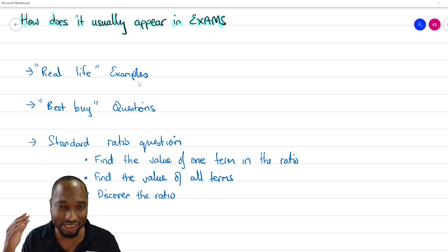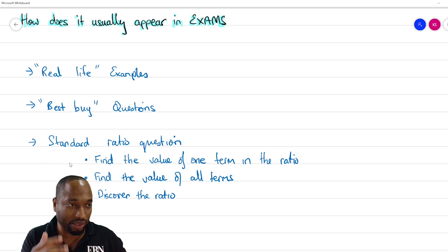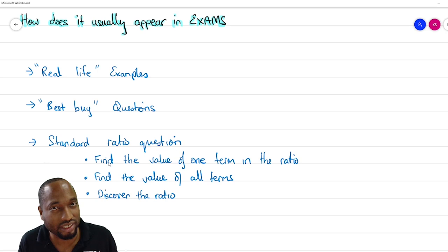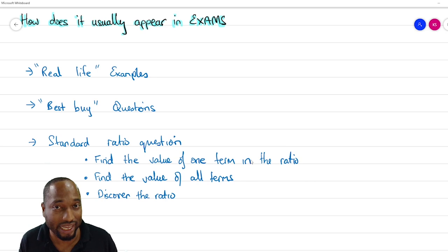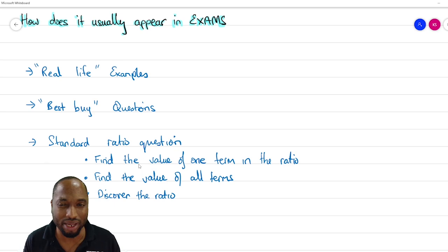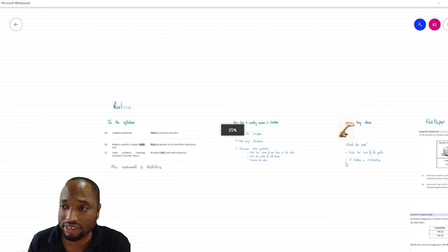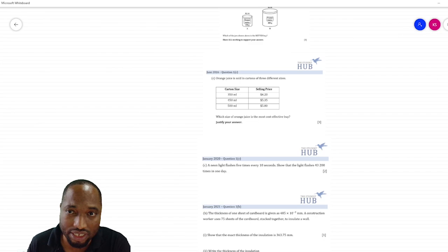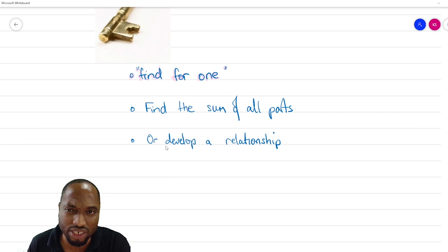Either you get a real life example, a best buy question, or the standard ratio question where they literally say they share a sum of money in a ratio between three boys. When they say that, there are normally three things they want you to find: discover the ratio itself, find the value of one term in the ratio like how much Peter gets, or find the total amount of money — some combination of the three. There are three key ideas, and you'll see them repeating over and over as we do the questions.